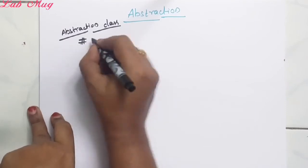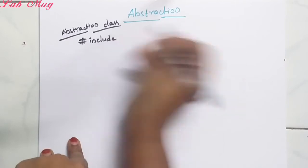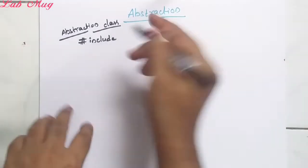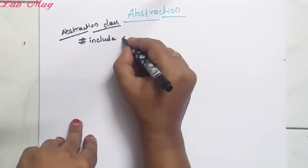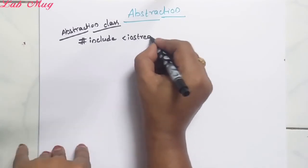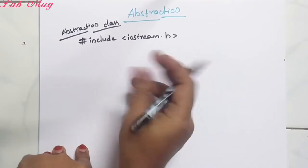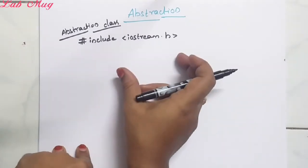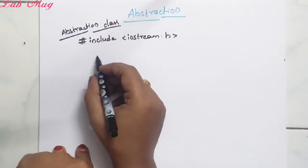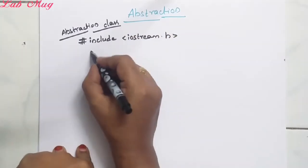So the first type of abstract class example program chubistam. Abstract class ni define cheyyadaniki ikkada virtual function use chestam. First, iostream dot h include cheskundanam. By using cin and cout statements kosam ikkada iostream dot h include cheskundam.